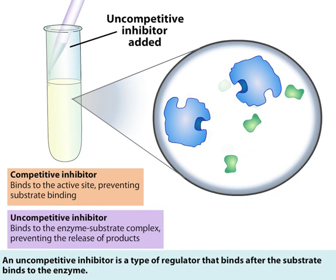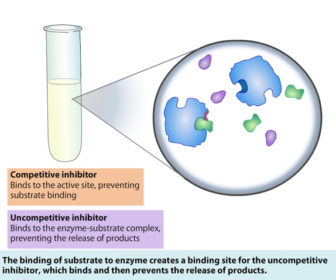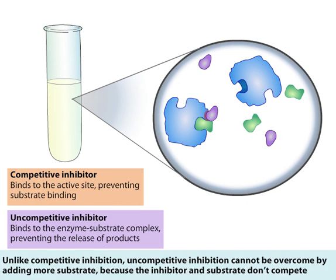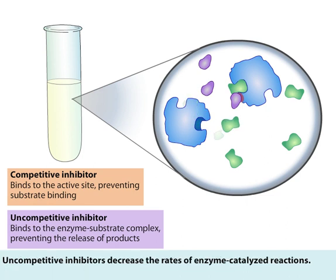An uncompetitive inhibitor is a type of regulator that binds after the substrate binds to the enzyme. The binding of substrate to enzyme creates a binding site for the uncompetitive inhibitor, which binds and then prevents the release of products. Unlike competitive inhibition, uncompetitive inhibition cannot be overcome by adding more substrate, because the inhibitor and substrate don't compete for the same binding site. However, uncompetitive inhibitors can become unbound, allowing some product formation. Uncompetitive inhibitors decrease the rates of enzyme-catalyzed reactions.